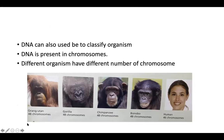Other than the binomial system, we can also use DNA to classify organisms. DNA is present in the chromosome, and chromosomes are found in the nucleus. So in the cell, we have the nucleus; in the nucleus, we have chromosomes; and in the chromosomes, we have DNA.